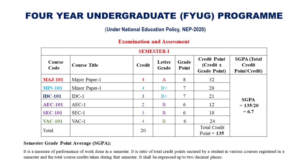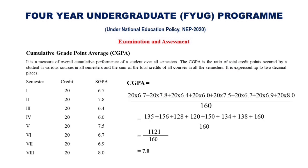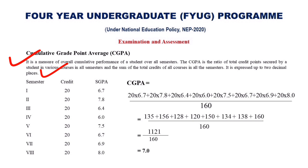In this way the SGPA obtained in all semesters is calculated. Finally, from the SGPA values, a Cumulative Grade Point Average, that is CGPA, is determined. The CGPA is the measure of overall cumulative performance of a student over all semesters. It is the ratio of total credit points secured by a student in all semesters to the sum of total credits of all courses in all the semesters, expressed up to two decimal places.